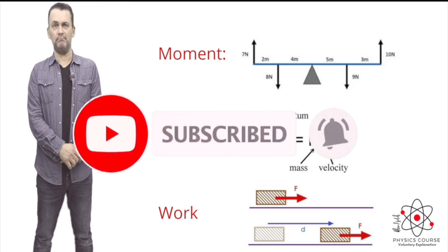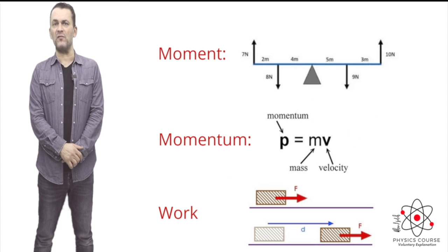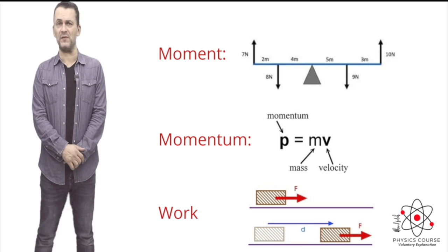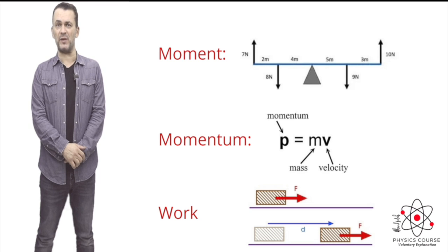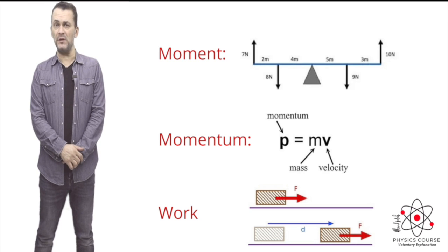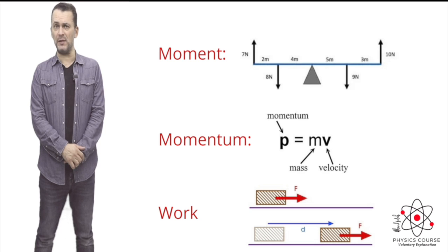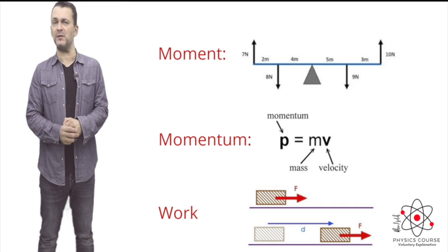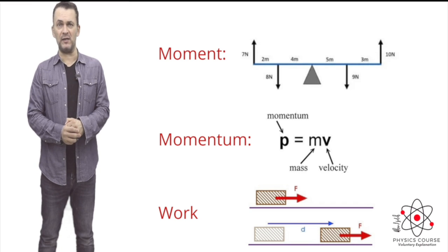Moment is simply force times displacement, but when it comes to a force causing rotation. Momentum is the mass of the moving object times its velocity. When it comes to work, it is force times displacement. Observe the big difference between work and moment: work is force times displacement, but the displacement and the force must act in the same direction. When it comes to moment, the force and the displacement make a right angle to each other.